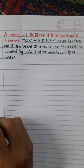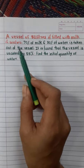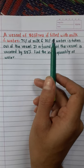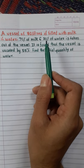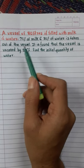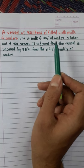Hello my dear friends, today we will solve this question. A vessel of 80 liters is filled with milk and water. 70% of milk and 30% of water is taken out of the vessel, and it is found that